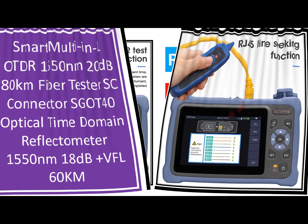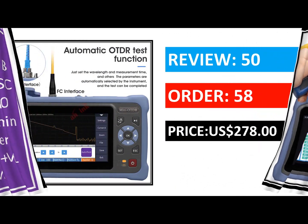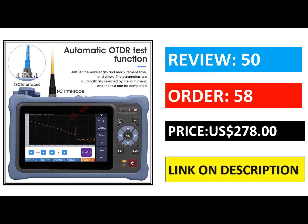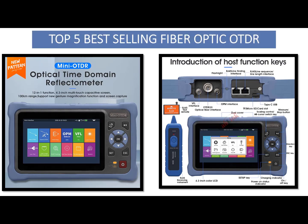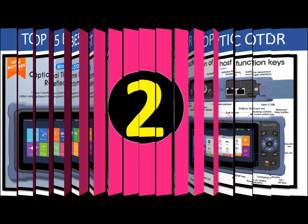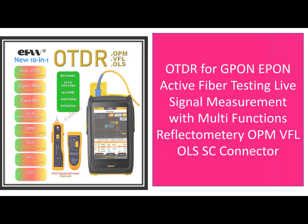An optical time domain reflectometer (OTDR) is a device used to measure the length of a fiber optic cable. It sends out pulses of light at different frequencies along the fiber and measures how much light returns back. By knowing the frequency of the pulse sent out and the frequency of the returning light, the distance between two points can be calculated.